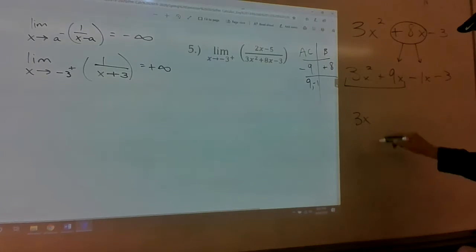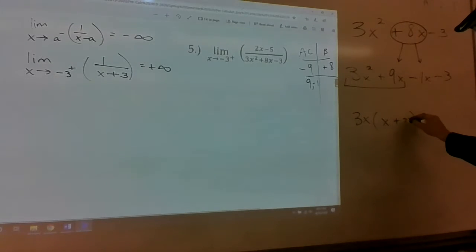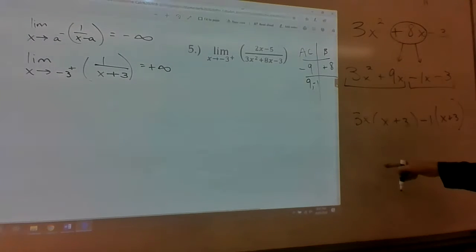Three x. Leftovers, x plus three. You group these two together. What do they share? Negative one. What are the leftovers? x plus three. So the bottom factors as 3x - 1 times x + 3.